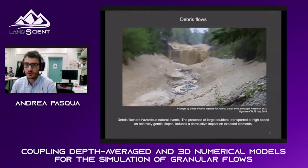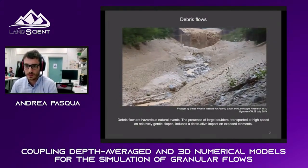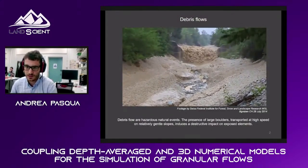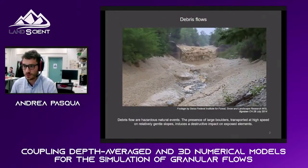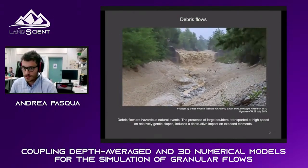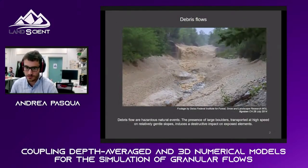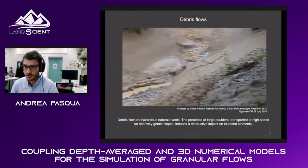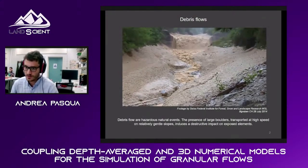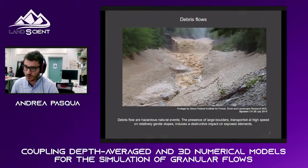I want to start by showing you a recording of debris flow in Switzerland in 2005. As you can see in this video, one of the most important characteristics of debris flow is that there are big coarse boulders that tend to accumulate at the front. The second key aspect is that although the slope is not very steep, the boulders tend to flow at high speed.